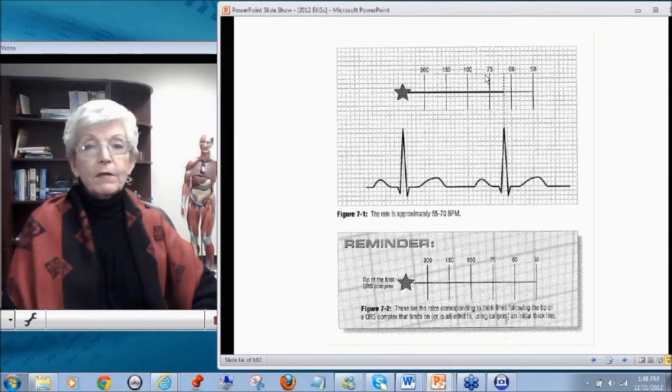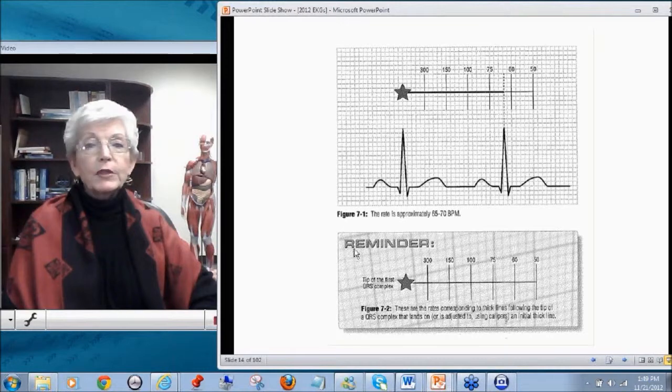And at six, 50. So you can just use this. This is a rough approximation using the big box theory of heart rate. That's not the method I would like you to use. It's not as precise.